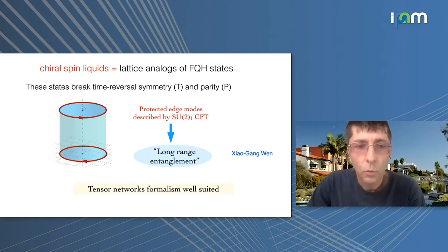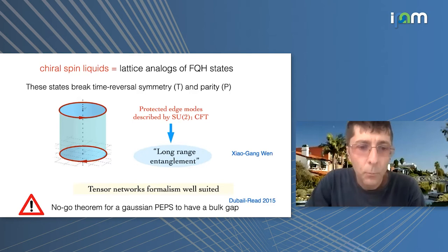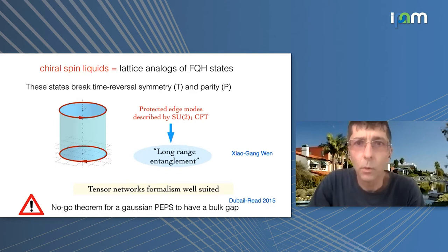These are long-range entangled states that can be difficult to handle by many techniques, but for which tensor networks are perhaps well suited. We have to be careful though: there is a theorem by Dubail and Read (circa 2015) that prevents, for a Gaussian PEPS or free-fermion wave function, having a bulk gap together with gapless edges. So there is a no-go theorem at least for free fermions, and we will see what happens for interacting ones.